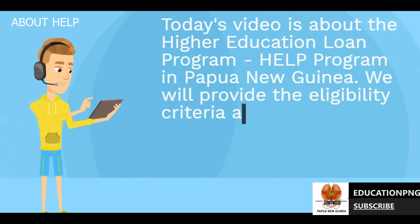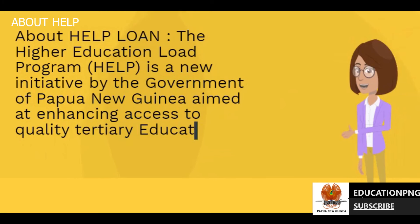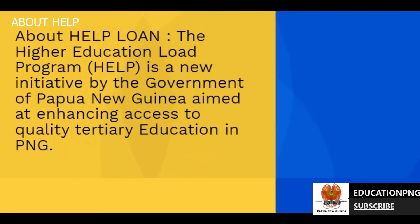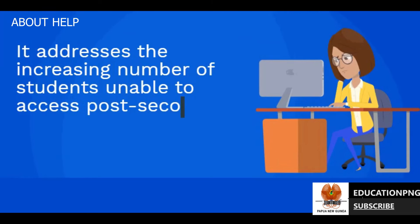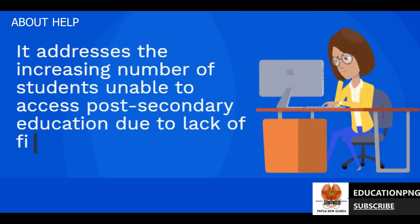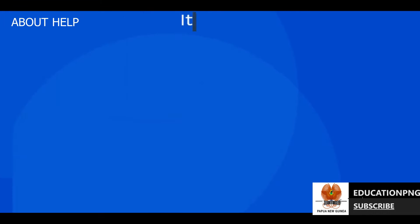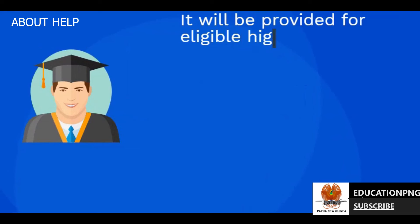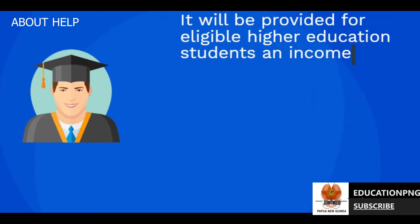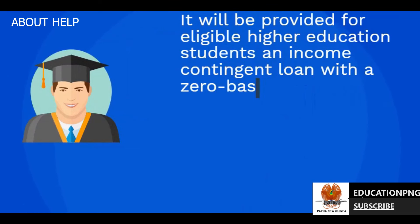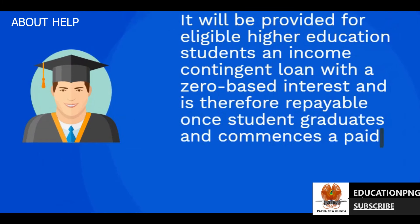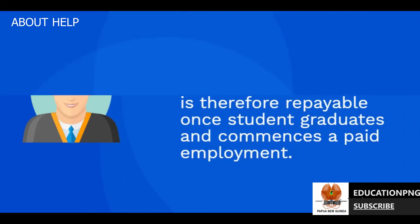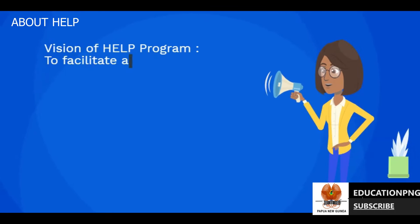About HELP Loan: The Higher Education Loan Program, HELP, is a new initiative by the Government of Papua New Guinea aimed at enhancing access to quality tertiary education in PNG. It addresses the increasing number of students unable to access post-secondary education due to lack of financial resources. It will provide eligible higher education students an income-contingent loan with zero-based interest, repayable once the student graduates and commences paid employment.